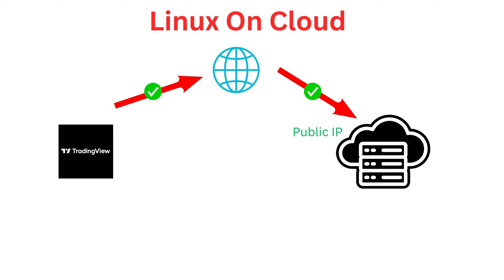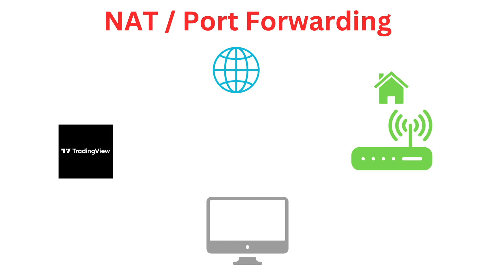In my previous video, I detailed the process of setting up a TradingView webhook directed towards a Linux instance hosted on a cloud platform. This process was relatively straightforward due to the accessibility of Linux machines via public IP addresses, enabling direct communication with TradingView. However, if you intend to route the webhook to a Mac or Linux system within your home network, you'll likely encounter the obstacle of being behind your internet service provider's home router.